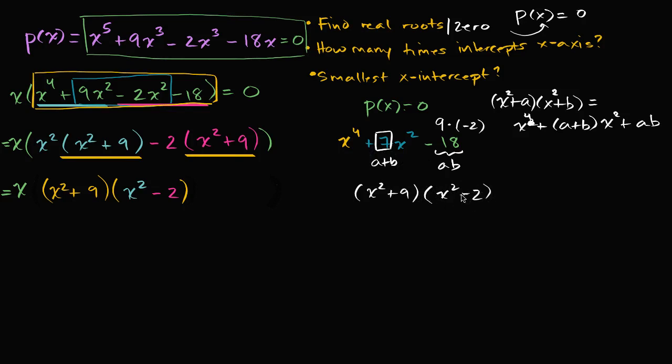times x squared minus two. I could say plus negative two, it's the same as x squared minus two. And that's exactly what we got right over here. Of course you have this x out front that I didn't consider.